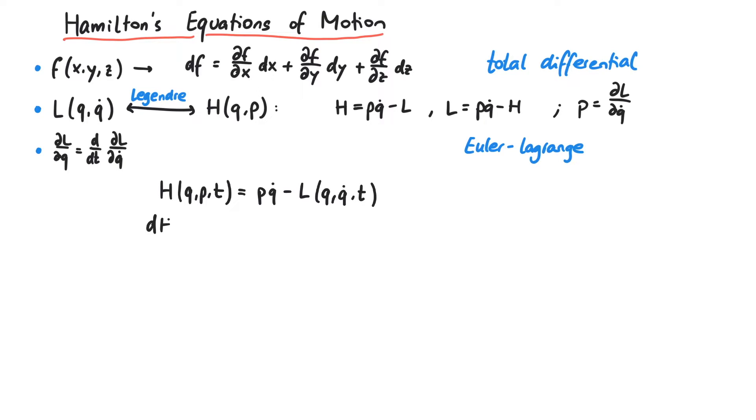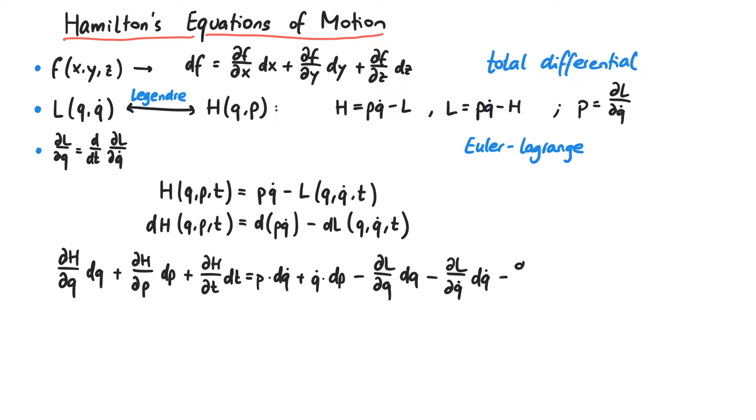As a first step, we take the total differential of both sides. This means we have derivatives of the Hamiltonian with respect to q, p, and t on the left-hand side of the equation. And after using the product rule for pq-dot, we also have derivatives of the Lagrangian with respect to q, q-dot, and t.